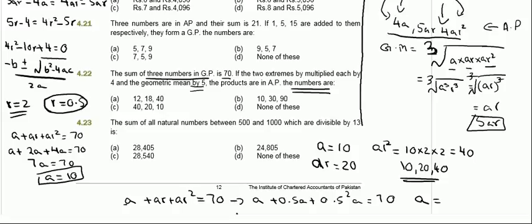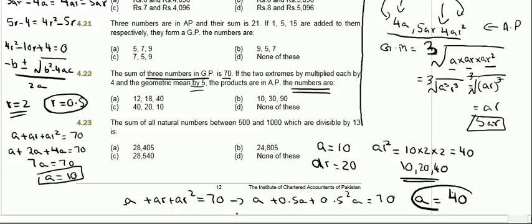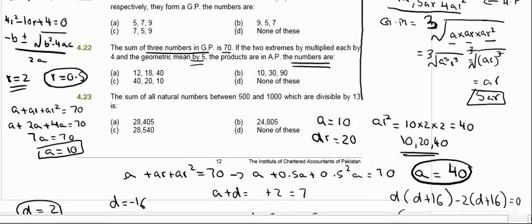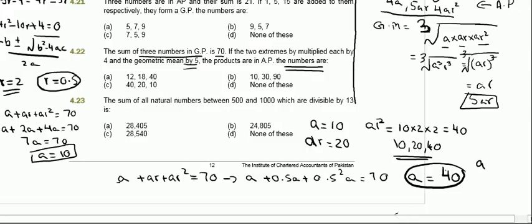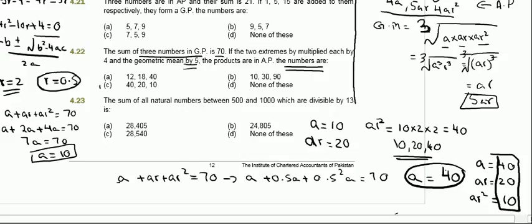Solving this, a equals 40. With r equals 0.5, the three terms are: a equals 40, ar equals 40 times 0.5 which is 20, and ar squared equals 40 times 0.25 which is 10. So the three numbers are 40, 20, and 10, and the answer for 4.22 is C.